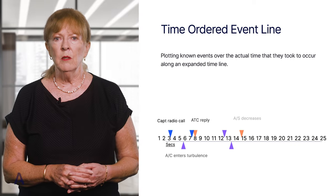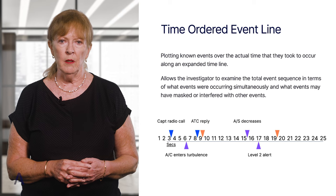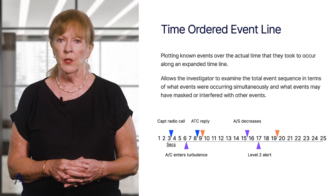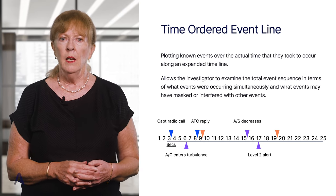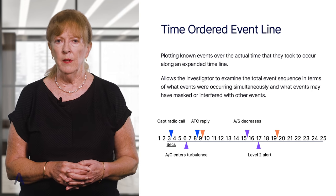A simple time-ordered event line can be used in less complicated situations to plot known events at the times and over the time intervals they occurred. An expanded timeline, such as the one shown here, allows the investigator to examine the total event sequence in terms of what events were occurring simultaneously and what events may have masked or interfered with other events.